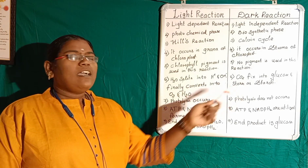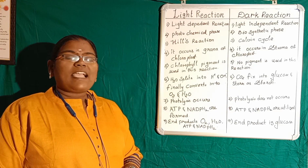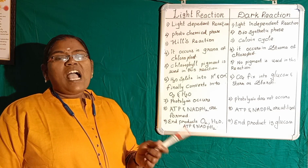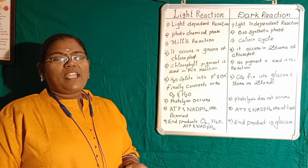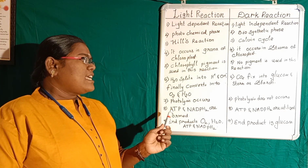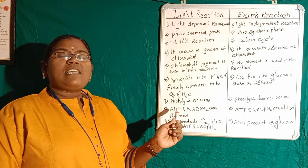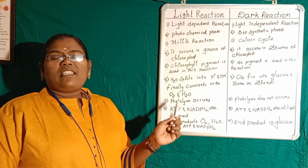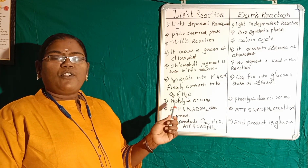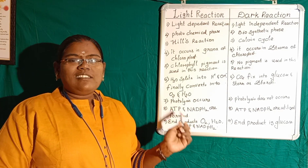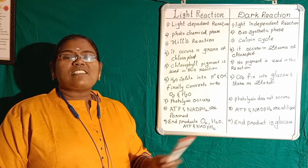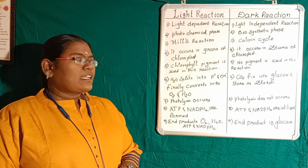In the dark reaction, CO2 is fixed into glucose and it will be stored as starch. In the light reaction, the major reaction is photolysis. Photolysis occurs in the light reaction; there is no photolysis in the dark reaction.